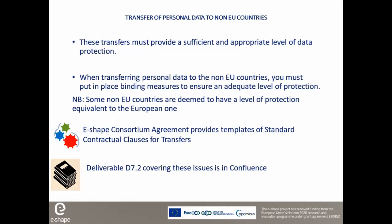In e-shape, in some cases personal data can be transferred to non-EU countries. These transfers must provide a sufficient and appropriate level of data protection. When transferring personal data to a non-EU country, you must put in place binding measures to ensure an adequate level of protection. Some non-EU countries are deemed to have a level of protection equivalent to the European one — Switzerland, for example. The e-shape consortium agreement provides templates of clauses for transfers, and deliverable D7.2 covering these issues is in Confluence.